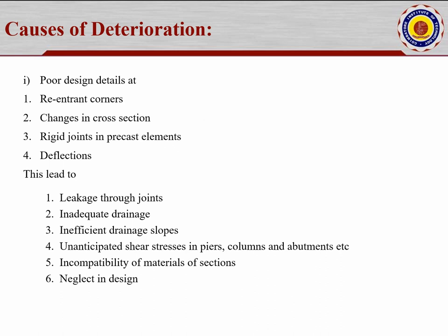Next is poor design details. Poor design details means re-entrant corners, changes in cross-section, rigid joints in precast elements, and deflections. For example, a section planned as 300×230 may later be changed to a different alignment at the client's request — changes made in the field without the knowledge of the structural engineer who designed the building, which may also lead to deterioration.